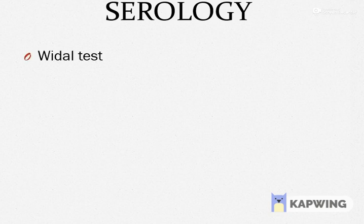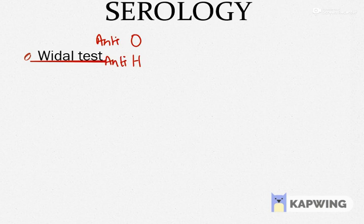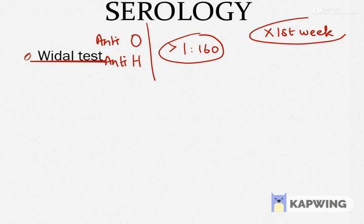Coming to the serology of enteric fever — you all must be knowing about the very important Widal test. The Widal test detects antibodies against the O antigen, which is the somatic antigen in Salmonella typhi, and against the H antigen, which is a flagellar antigen — so it detects anti-O titers and anti-H titers. For your exams: anti-O titers rise early and decline early in the course of illness, whereas anti-H titers rise late and decline late. When the antibody titer is more than 1:160, it is considered positive. Widal test should never be done in the first week of illness because its sensitivity is very low.